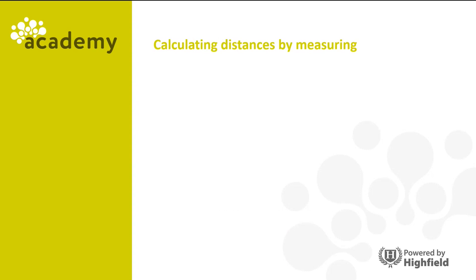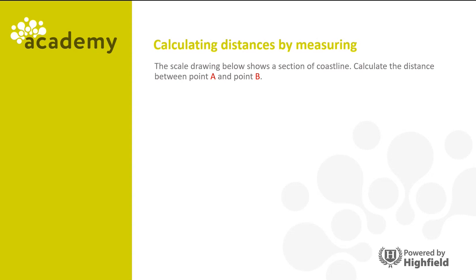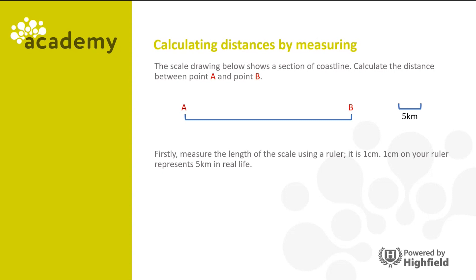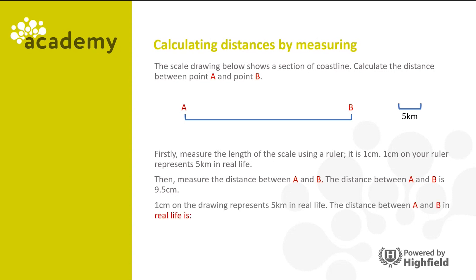So let's look at calculating distances by measuring. The scale drawn below shows a section of coastline. Calculate the distance between point A and point B. Let's say one centimeter on your ruler represents five kilometers in real life. We need to measure the distance between point A and point B. In this instance, the distance is 9.5 centimeters. So the distance between A and B in real life is 9.5 times 5, which is 47.5 kilometers.